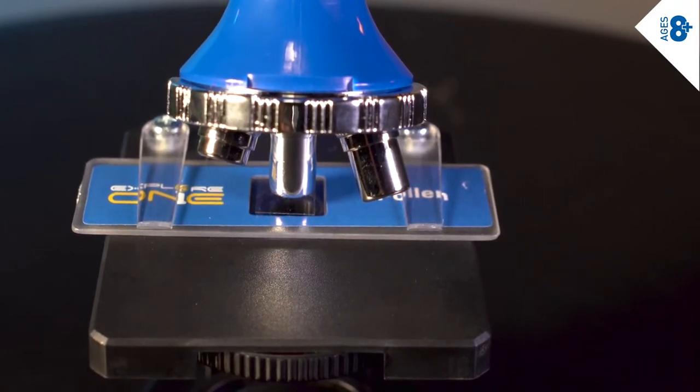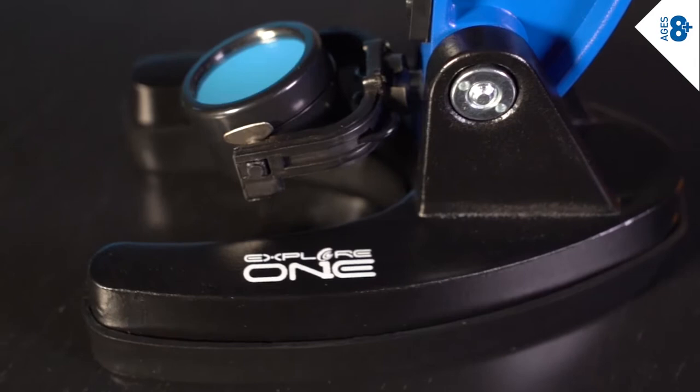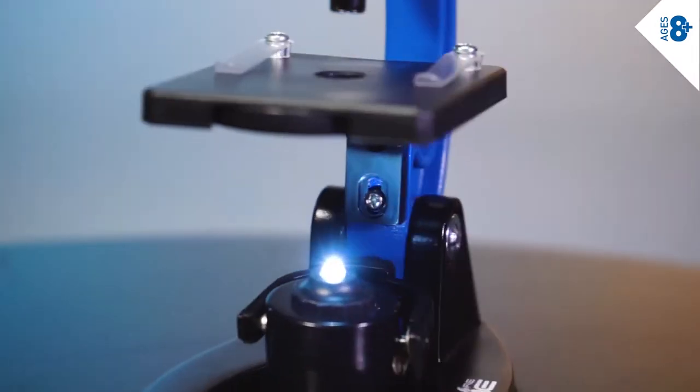The reversible illuminator unit combines a flat mirror for using ambient light and a white LED for illumination where you need it.